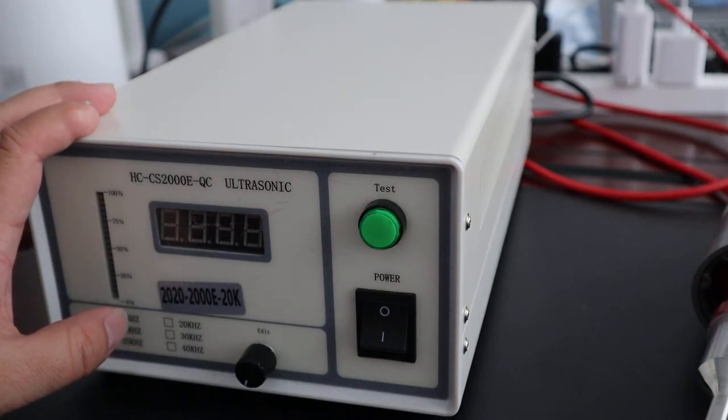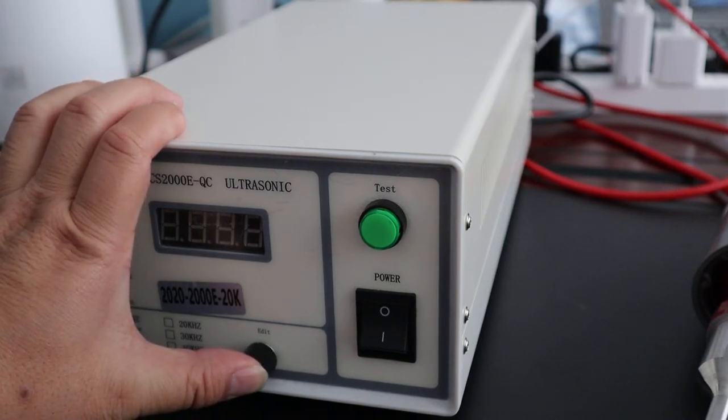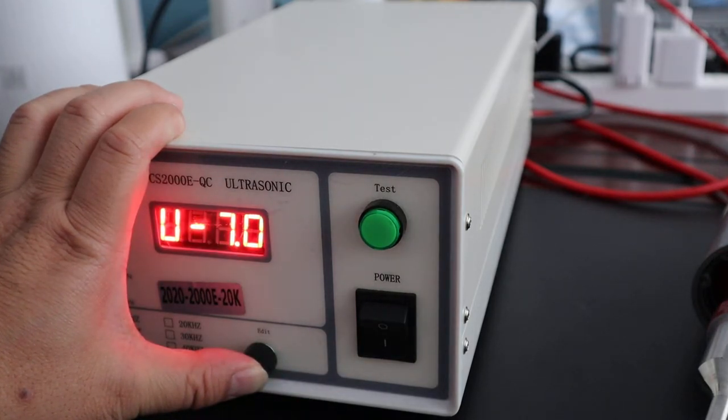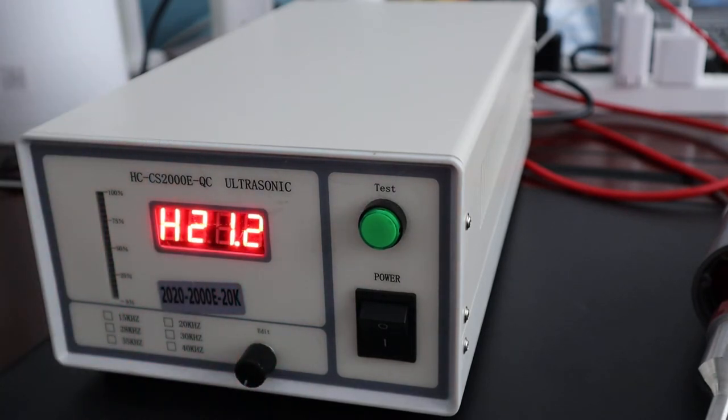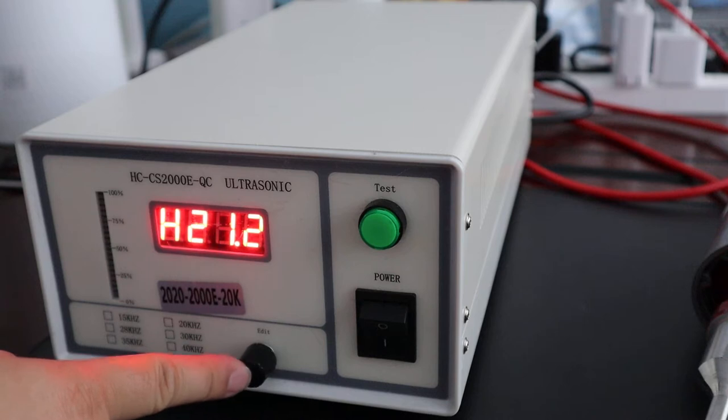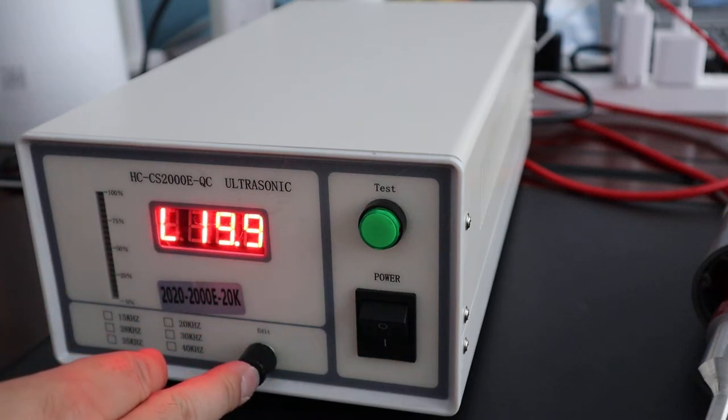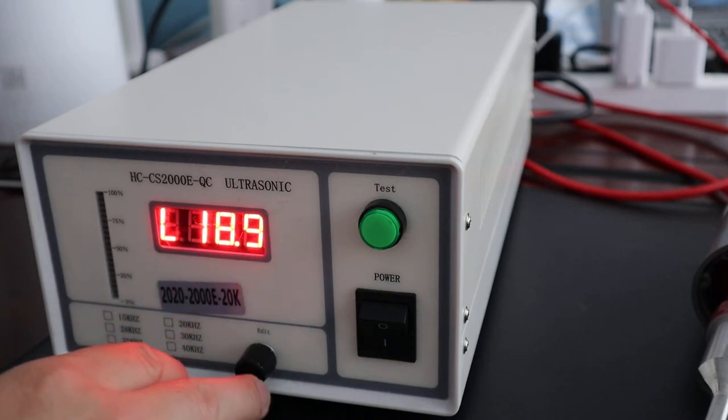So let's enter in the edit mode. Push the edit button and open the power. See? Like this. Release the edit. You will see the edge. Push the edge and spin it. Let's do it like this. Let's say 18.9.